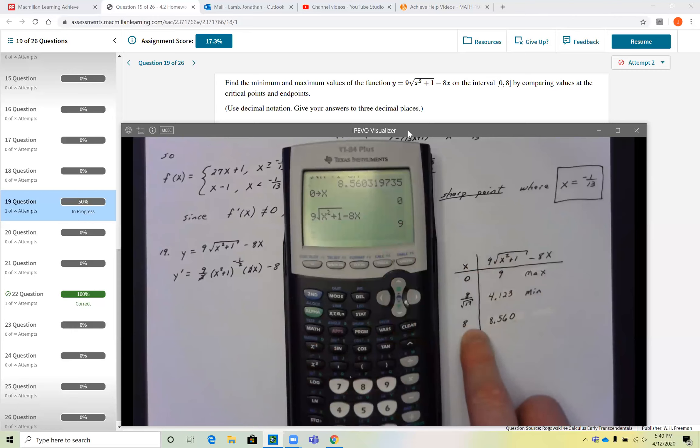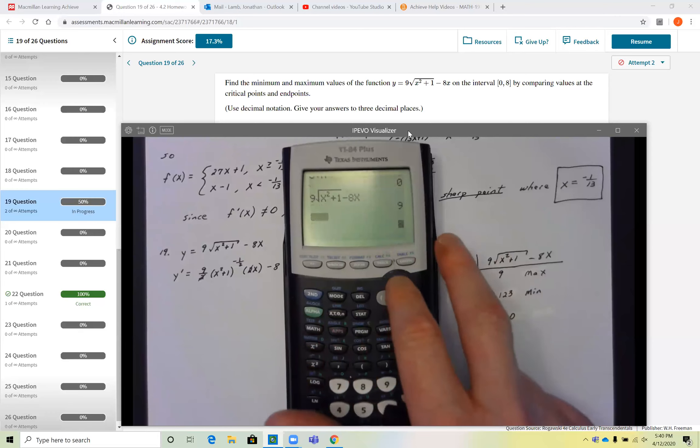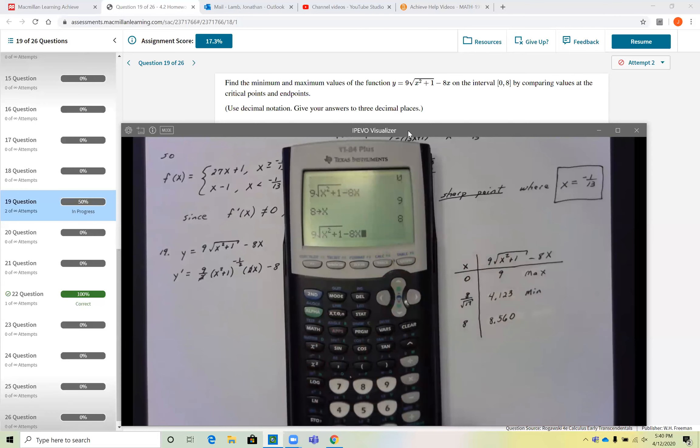If I plug in 8 in for x, 8 store x, and then I type it into that original function, then you can say you'll get the 8.560. Now if I do the 8 over the root of 17 and I store that in for x, and then I say now let's type in the original function, you'll see I get the 4.123.